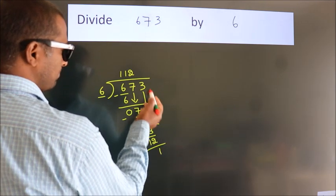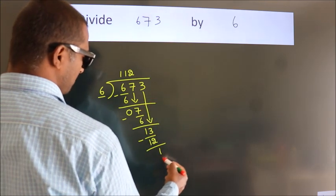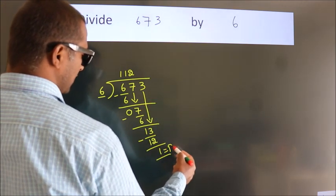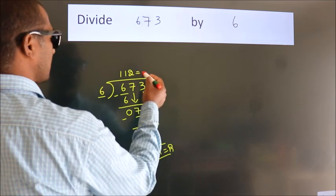After this, no more numbers to bring down. So we stop here. This is our remainder. This is our quotient.